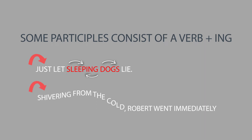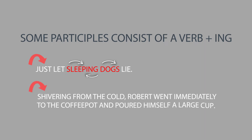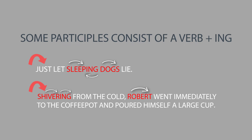Shivering from the cold, Robert went immediately to the coffee pot and poured himself a large cup. Shivering consists of the verb shiver plus the ending -ing, and it acts as an adjective in the sentence. It describes Robert and answers the question, what kind of, or which one.